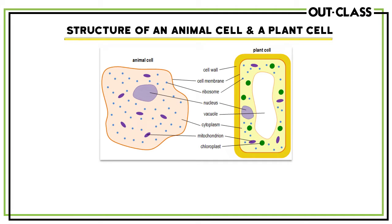Before we go any further, we need to know the structure of animal cells and plant cells and how they are different from each other. On the left side we have the animal cell and on the right side we have a plant cell. I'm sure you can already pick out some similarities and differences, but let's go through it.